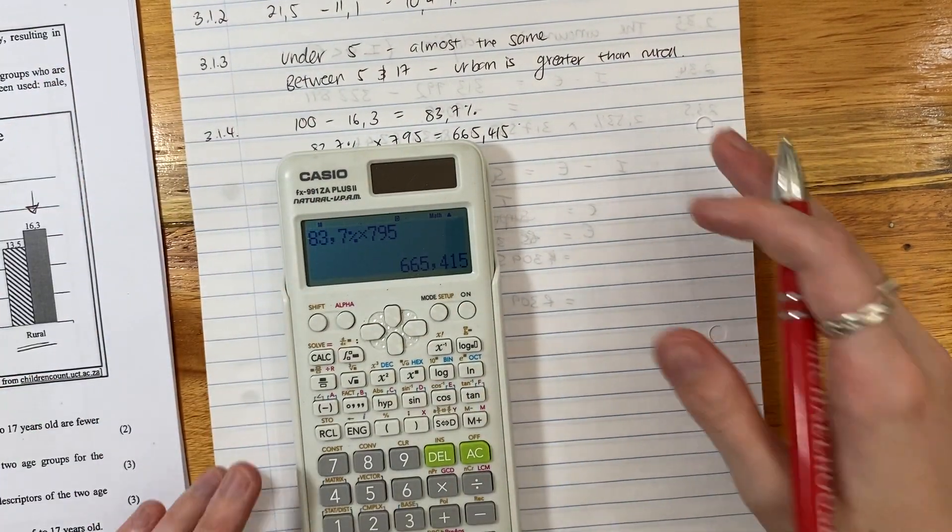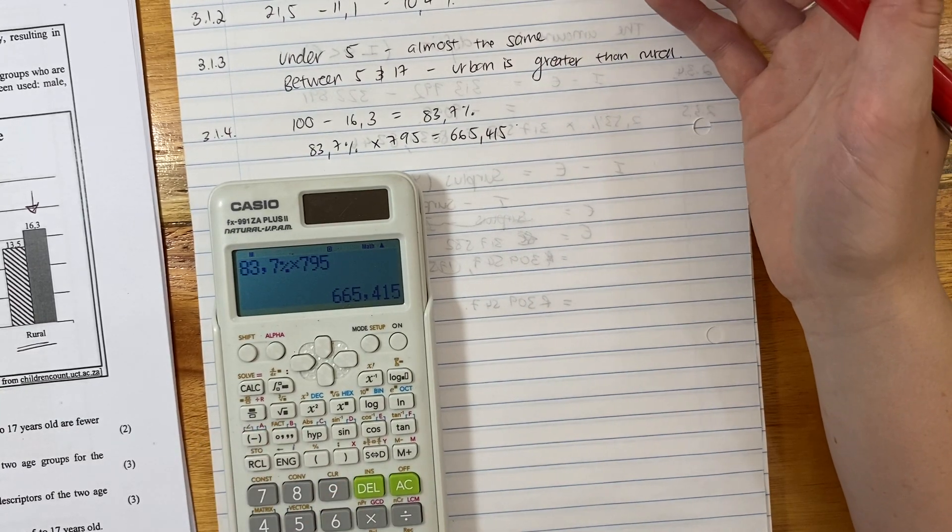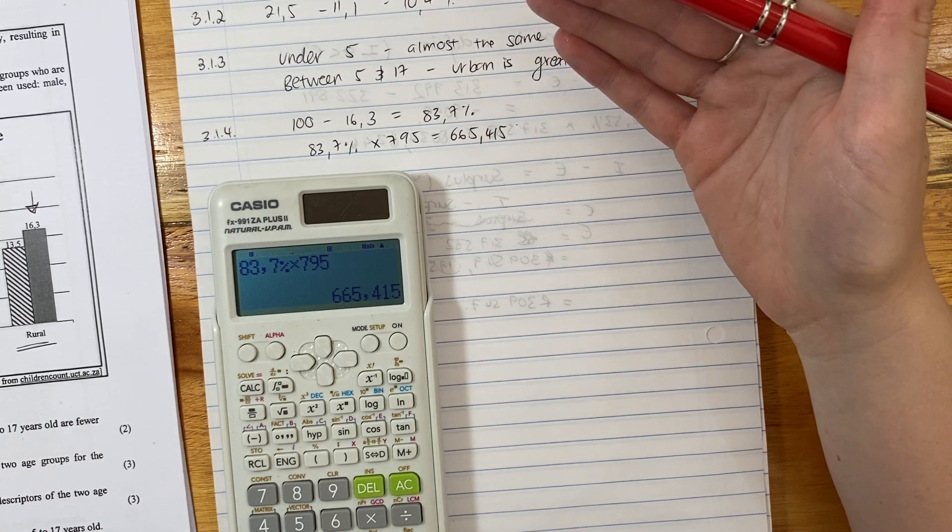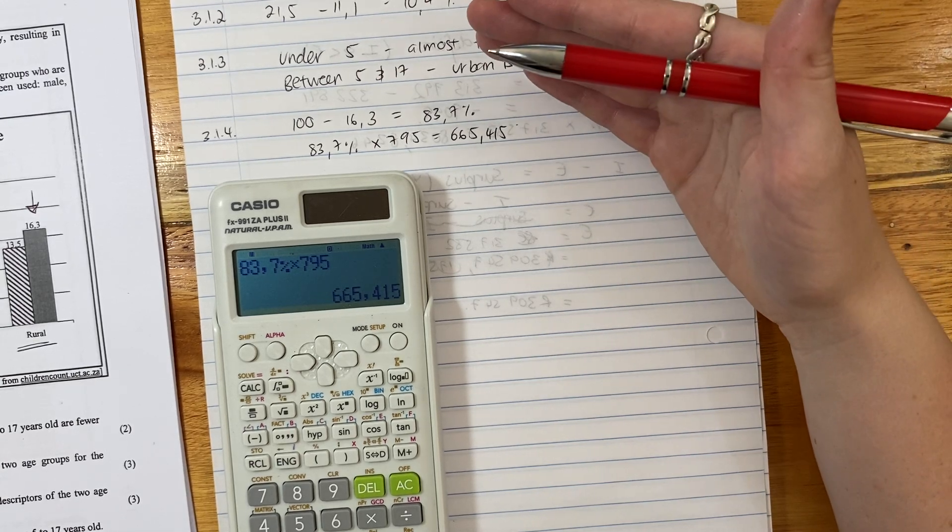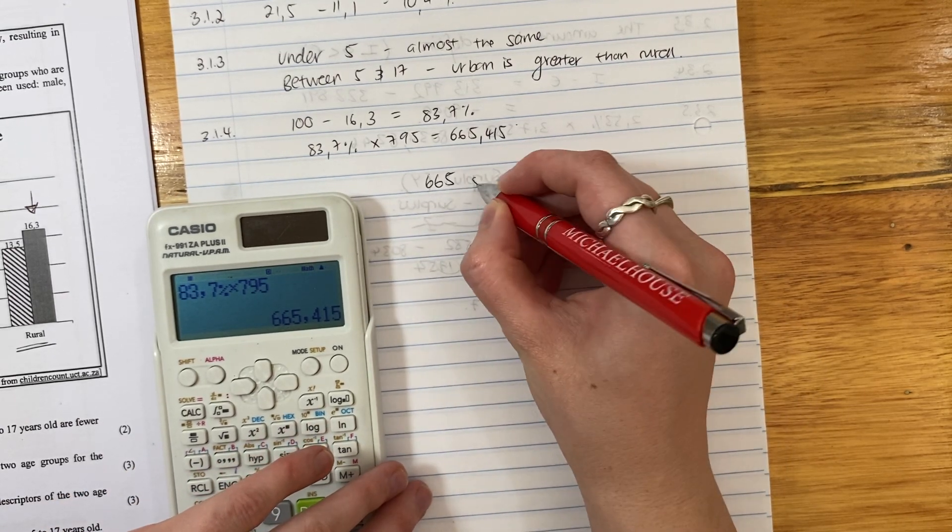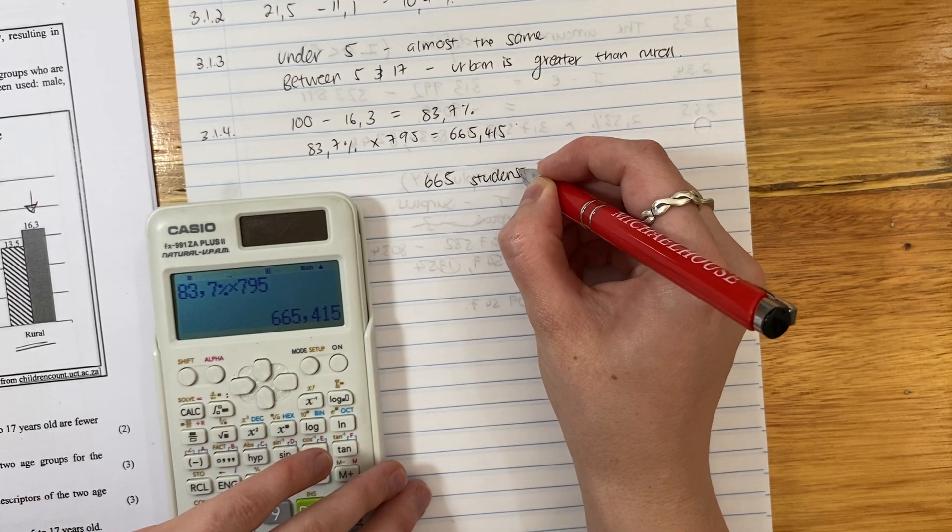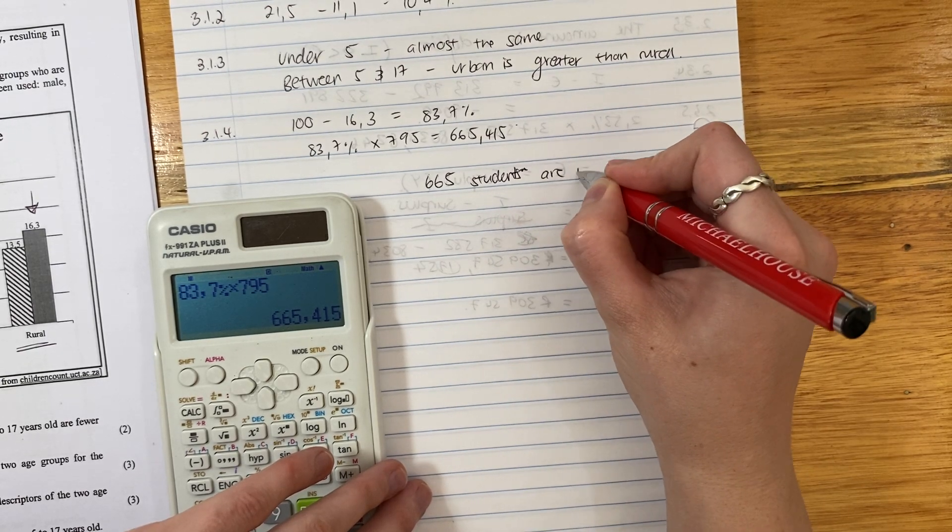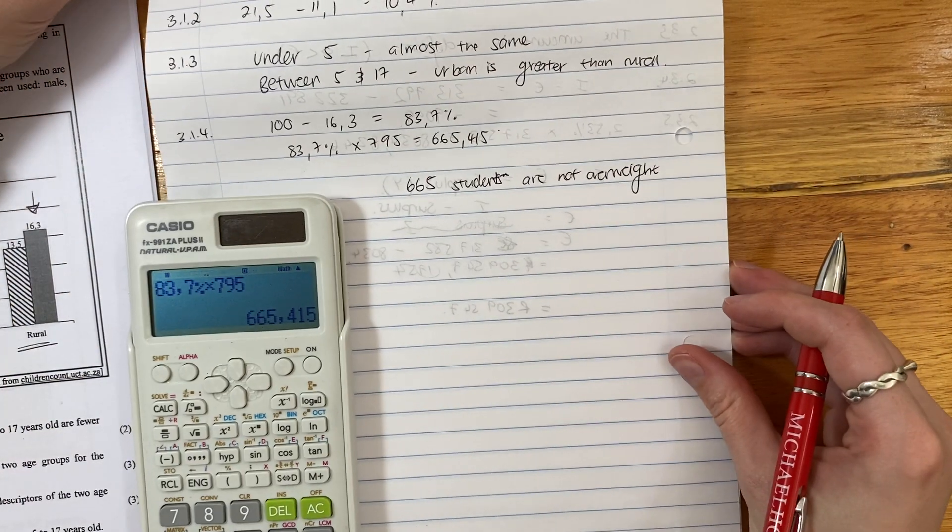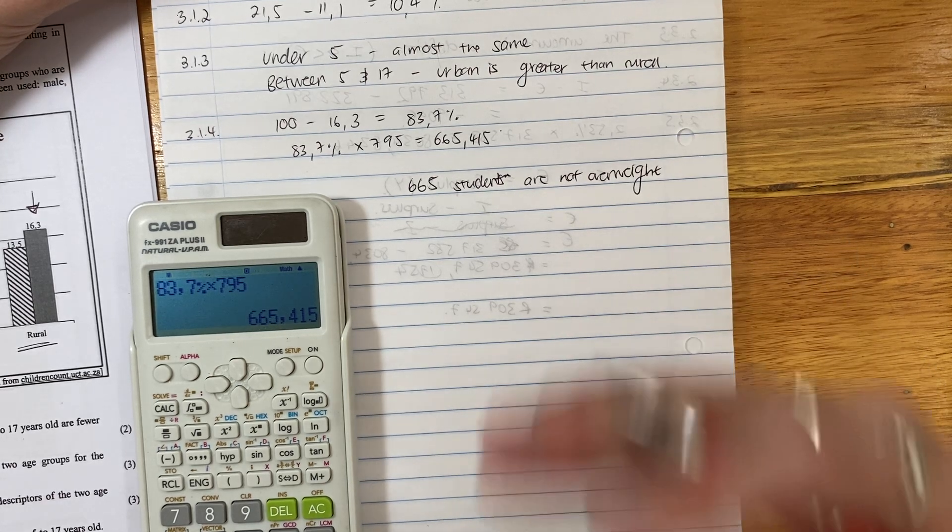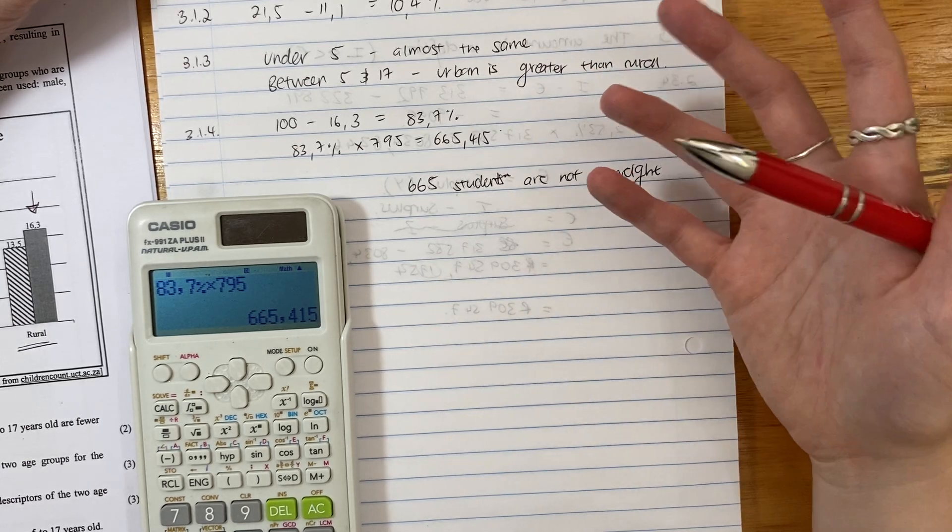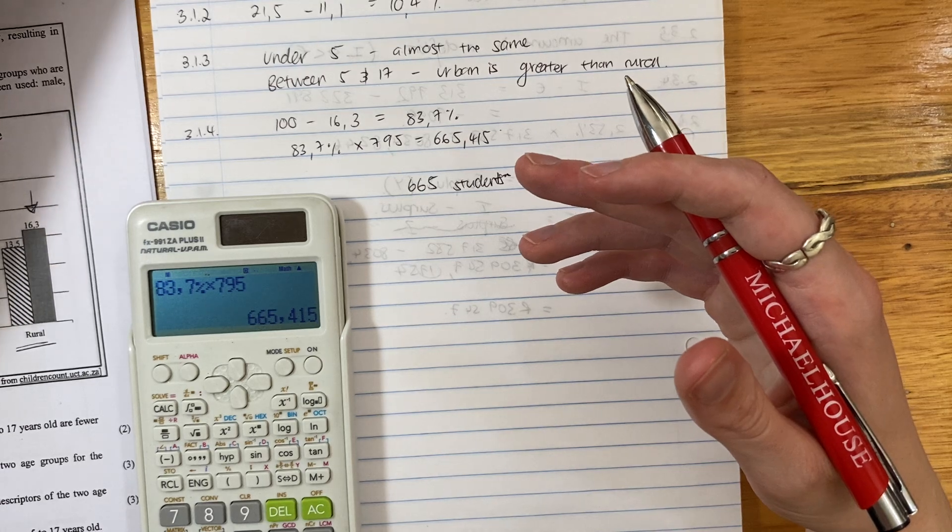Now this is a tricky one because then students often say, okay, well is it 665 students that are not overweight or is it 666 students that are not overweight? They would actually, in the memo, they would accept either. I would say just do a normal rounding in this case, and you would say, well 665 students are not overweight. If you said 666, that's okay, depends how you rounded it, but just make sure that you are making it clear to the examiner what it is or how it is that you are processing the question. Let's move on to the last question of this sub-question within question 3.